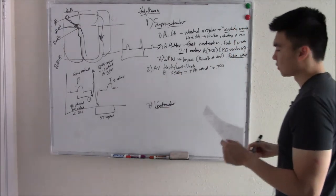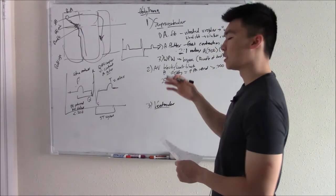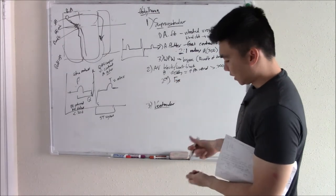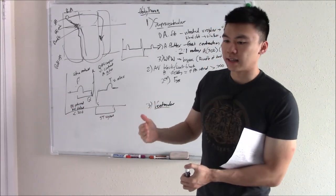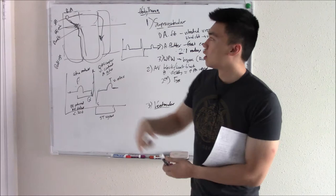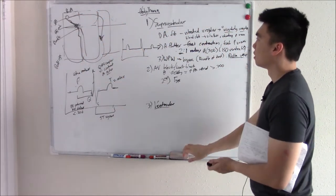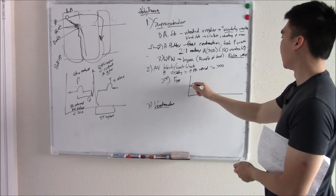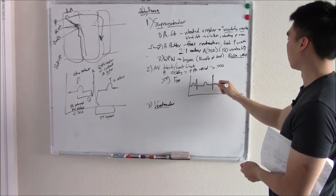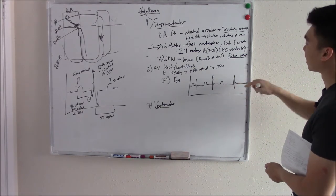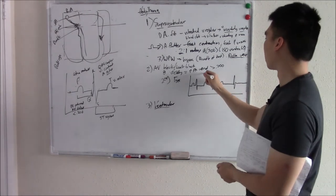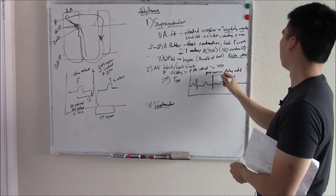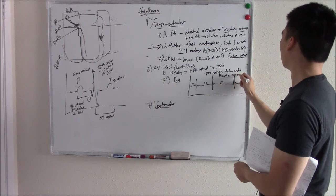Second degree heart block has two categories. Type one is a progressive delay: the PR interval gets longer and longer until one signal doesn't make it through at all — a beat is dropped. You need to be able to recognize these on the ECG, so study the pictures in the notes carefully, maybe put them on flashcards.